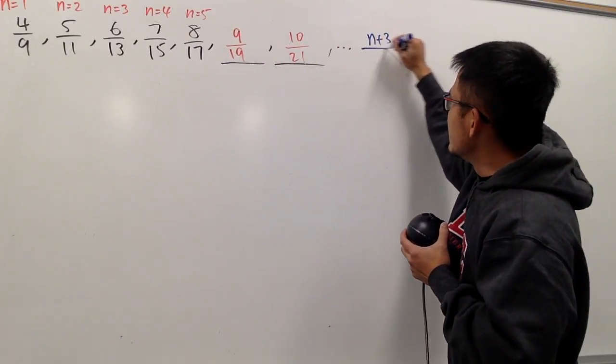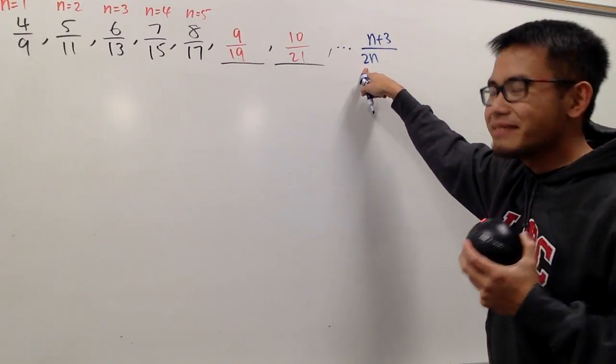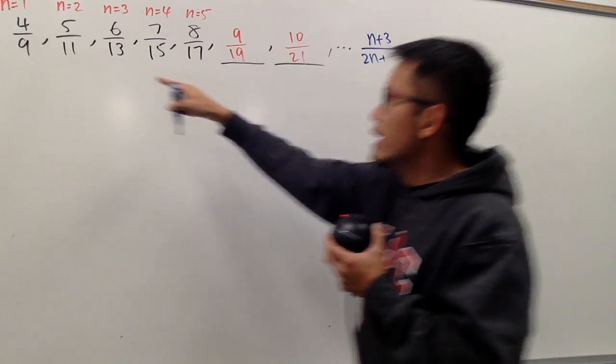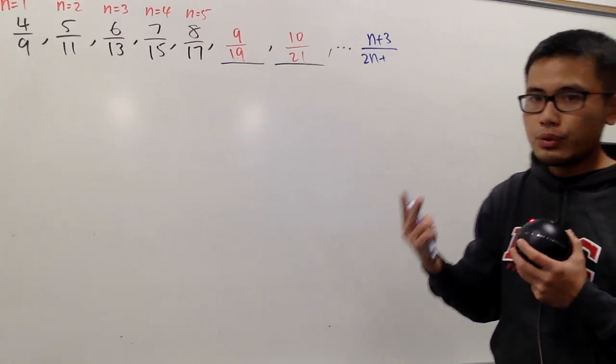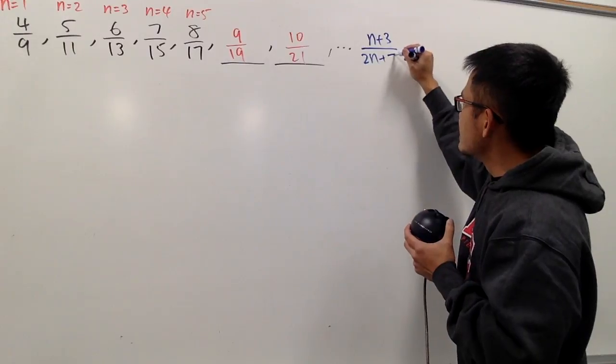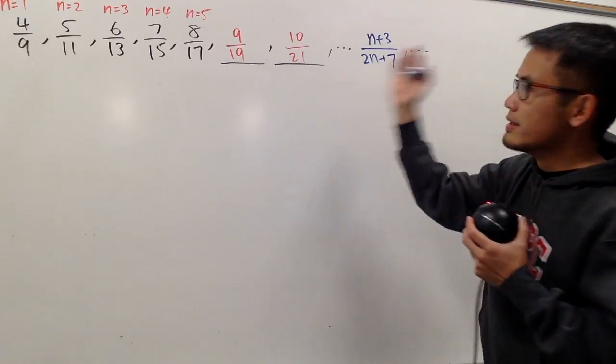And on the bottom, you see that when we have 1, this is 9, and when we have 2, this is 11, when we have 3, this is 13. Notice that every time we just go up by 2, right? So a good way to do it is, we will use 2n, 2 is the common difference. When n equals 1, plug in here, 2 times 1 is 2, and you need to end with 9, therefore I need to plus 7.